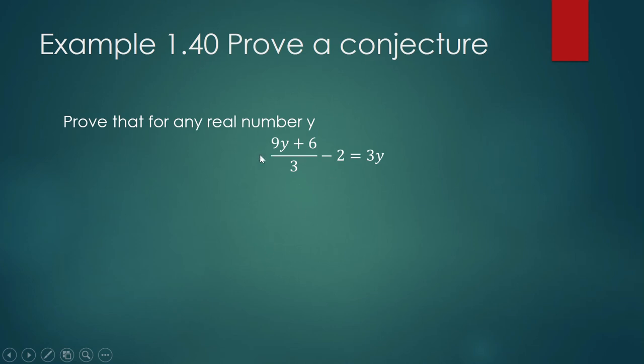Let us combine this. The LCD is 3, we multiply the terms by 3. This one becomes 3 times 2 is 6, and then we copy the operation: (9y + 6 - 6)/3. But this one is 0, so this is equal to 9y/3. We divided it by 3. 9 divided by 3 is 3, so this is equal to 3y. The expression on the left side of your equation is in fact equal to 3y, so we are done.